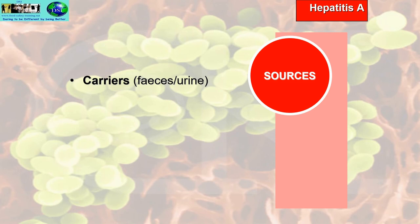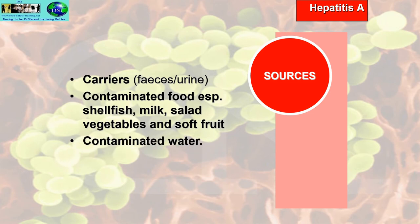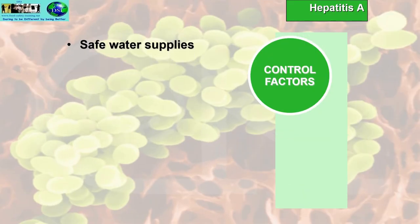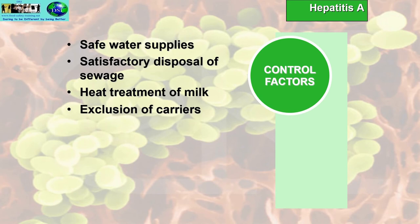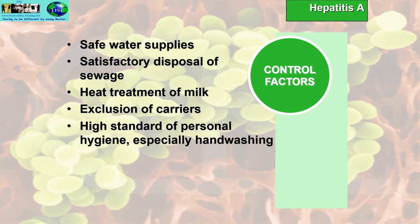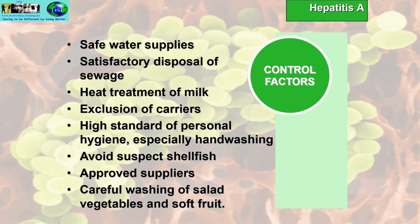Sources of Hepatitis A include carriers in their faeces and urine, and contaminated food — especially shellfish, milk, salad vegetables, soft fruit — and contaminated water. Control factors include safe water supplies, satisfactory sewage disposal, heat treatment of milk, exclusion of carriers, high standards of personal hygiene especially hand washing, avoiding suspect shellfish, using reputable approved suppliers, and careful washing of salad vegetables and soft fruit.